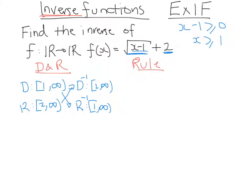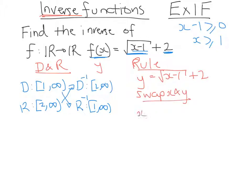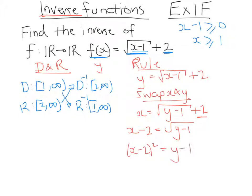Now, instead of f(x) we'll make it y. So we'll have y is equal to the square root of x minus one plus two. To find the rule for the inverse, we'll swap x and y. So that means we'll have x is equal to the square root of y minus one plus two. Now we'll take that plus two across to the other side, so we'll get x minus two equals the square root of y minus one. Now we'll square both sides to get rid of the square root.